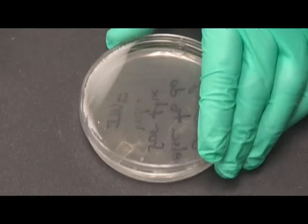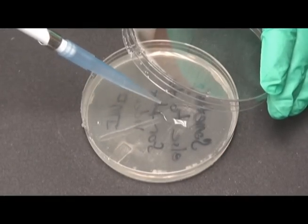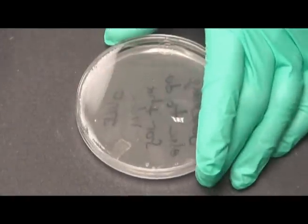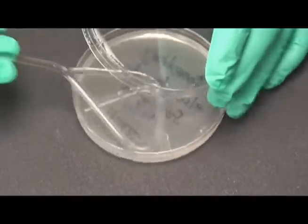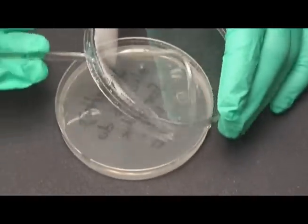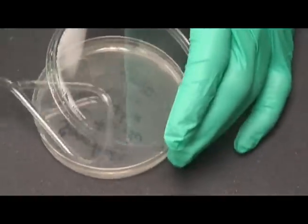On two separate special LB and ampicillin plates, plate 10 microliters and 100 microliters of the competent cells containing the plasmid DNA. Spread the cells in a circular manner using a glass sterilized rod. If unfamiliar with how to do this, review the fire safety video.